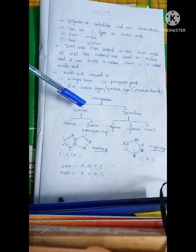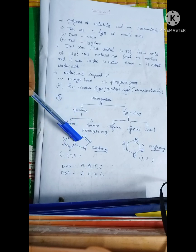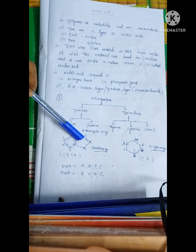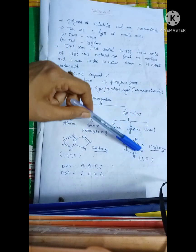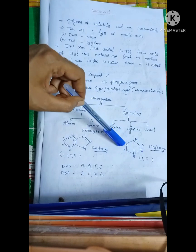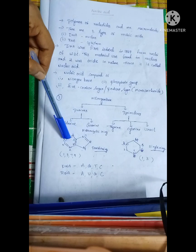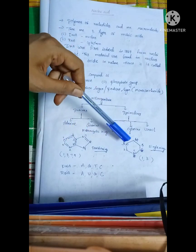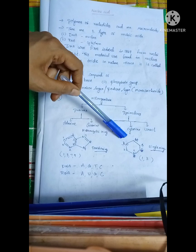Purines have a double ring structure — there are two rings in the chemical structure. Pyrimidines have only a single ring structure.